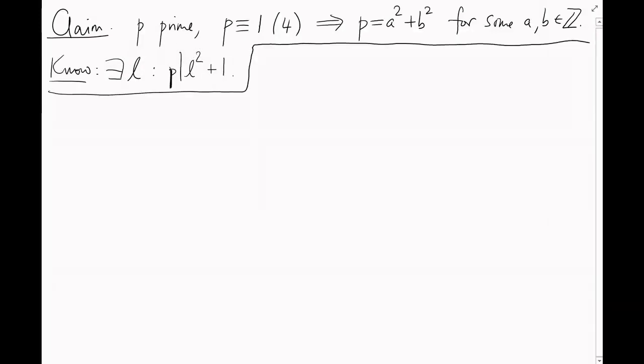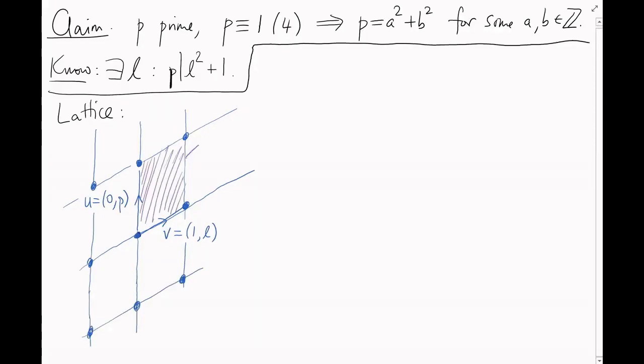Let's go back to what we wanted to prove at the start of this section. If p is a prime, 1 mod 4, then p equals a squared plus b squared for some integers a and b. Okay, let l be that number we just found, such that p divides l squared plus 1. And now we can set up the lattice that's going to solve this for us. Draw the lattice in R squared, generated by the vectors u equals (0, p), and v equals (1, l). The fundamental cell here has area p, so any convex symmetric bubble around the origin, with area bigger than 4p, will contain a lattice point.